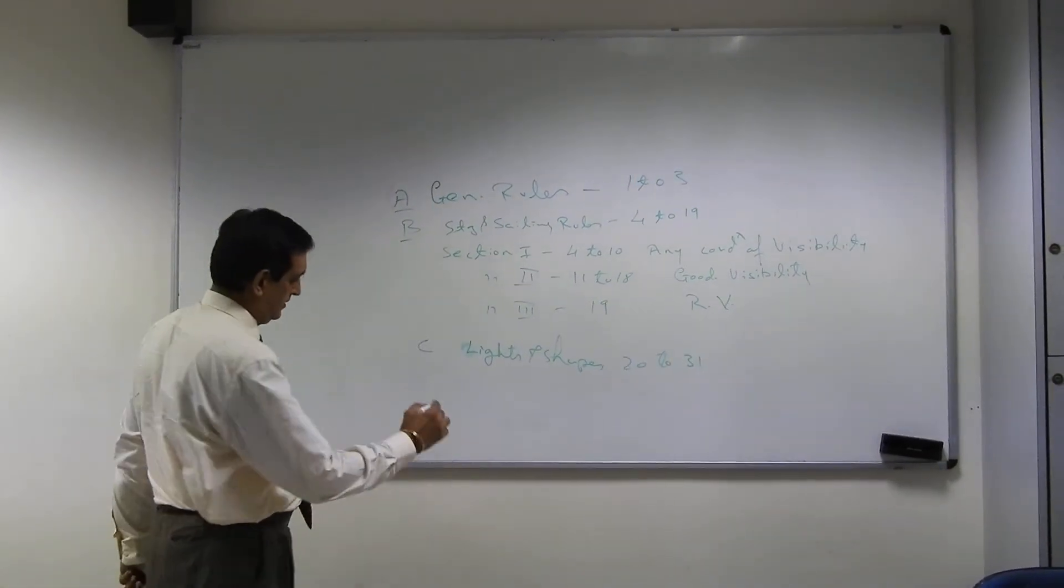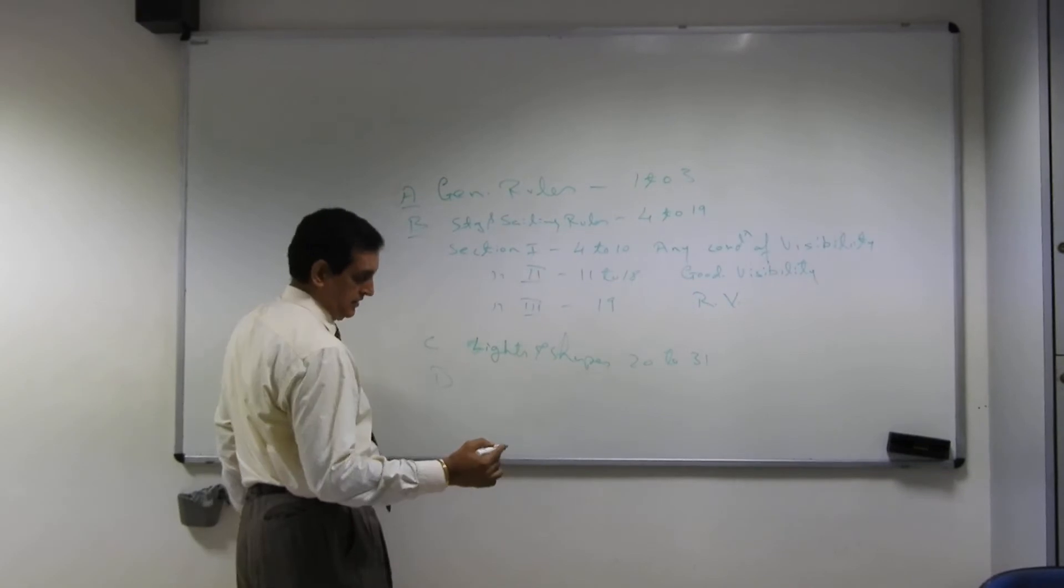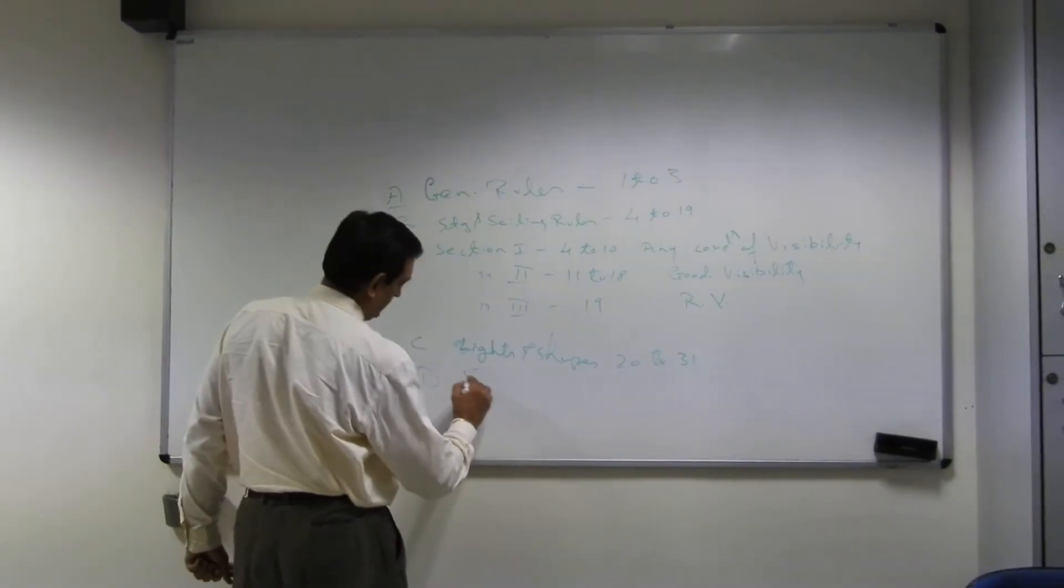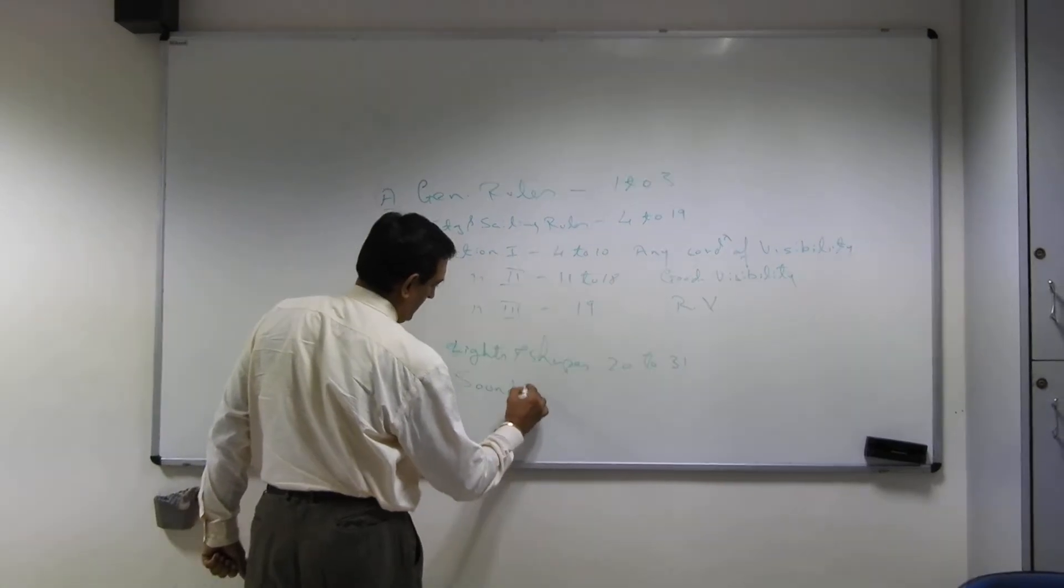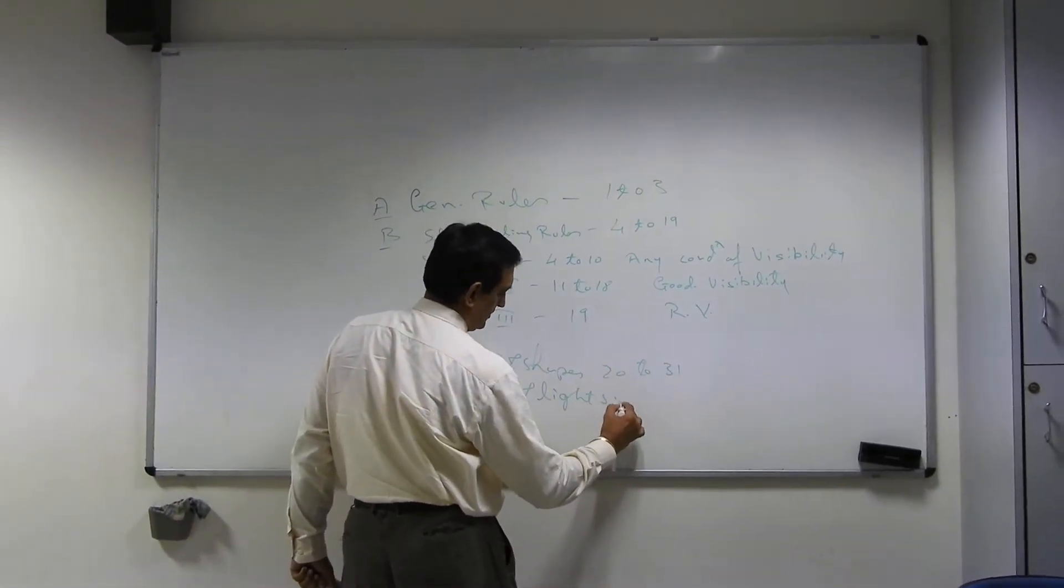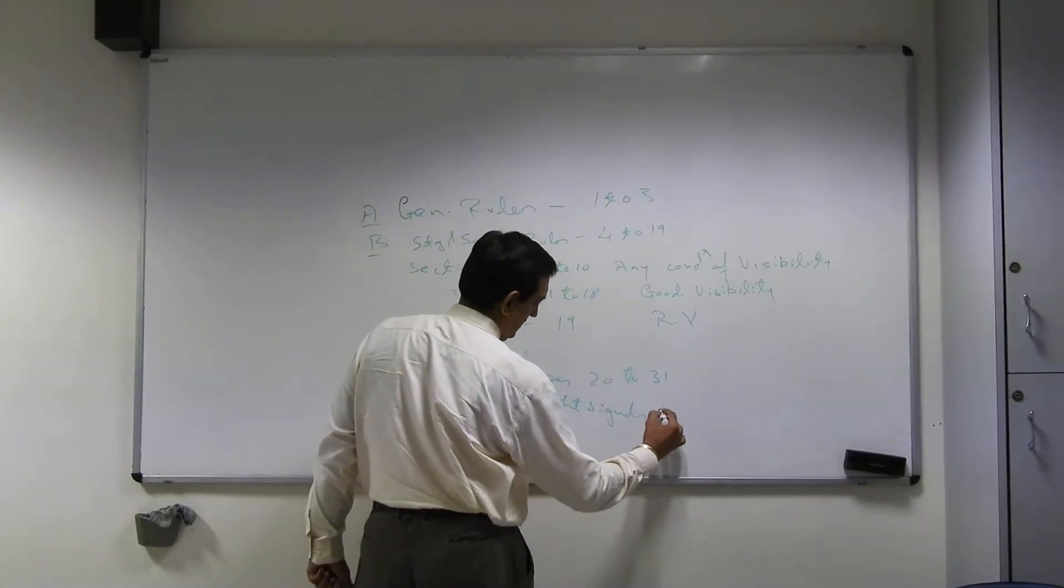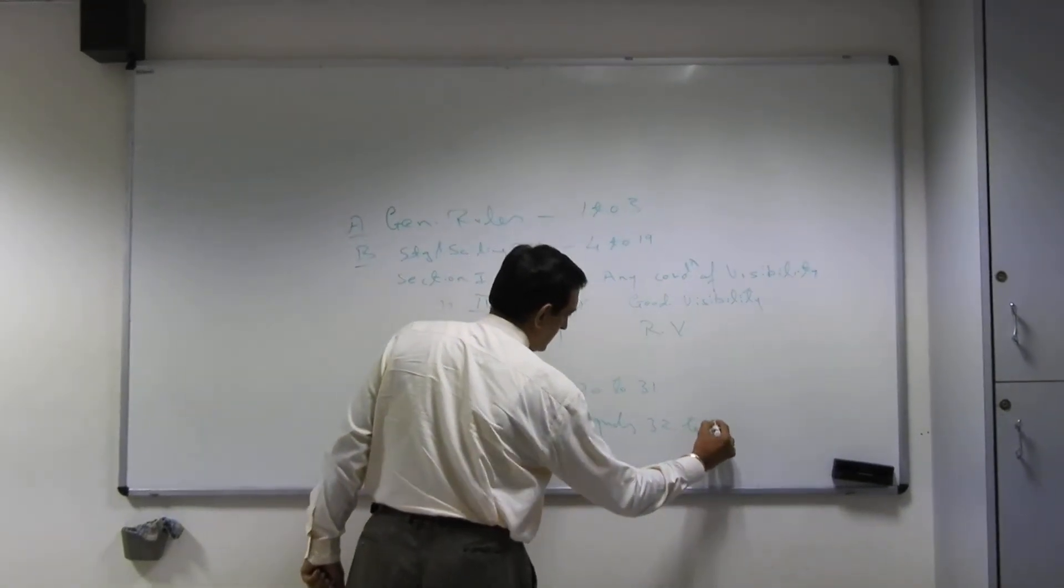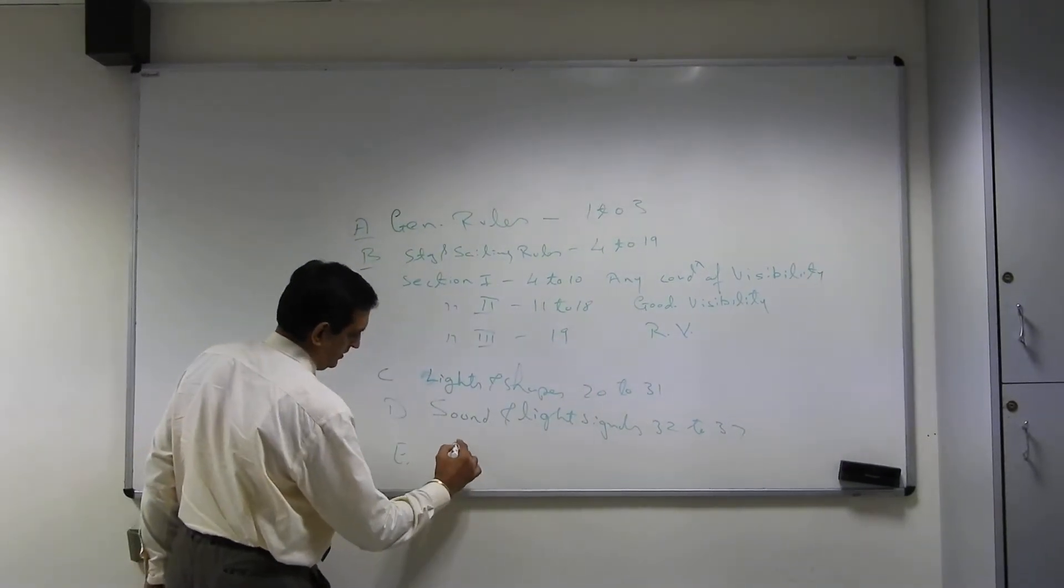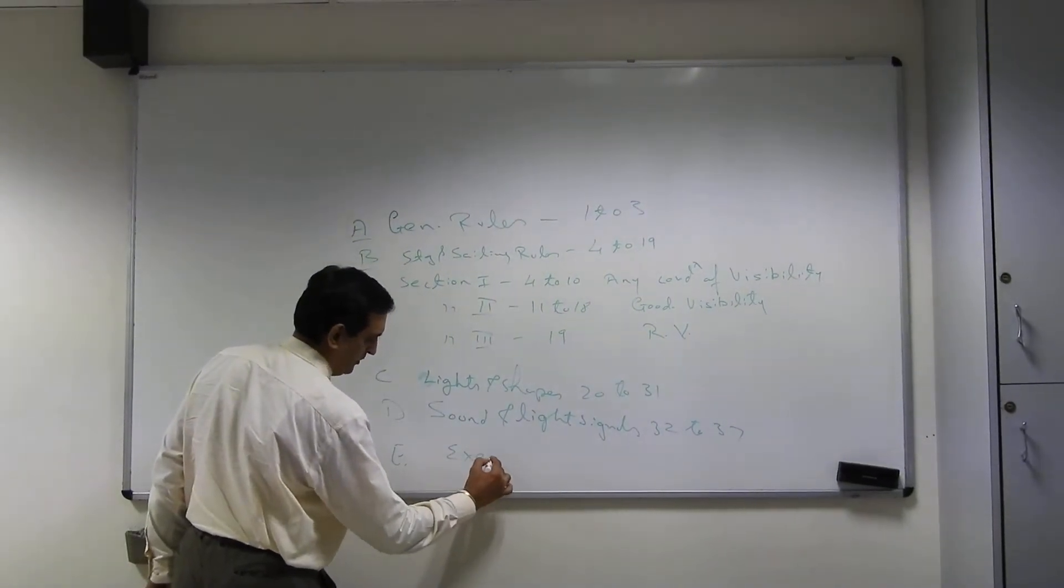Then what are these? Sound and light signals. This is rules 32 to 37.